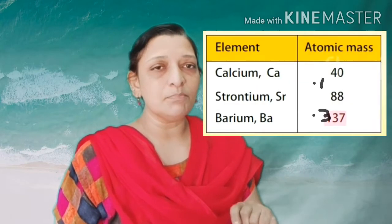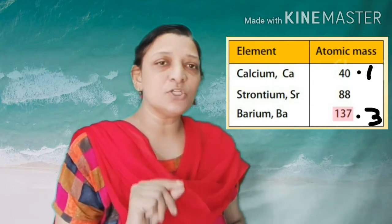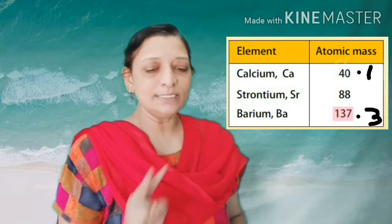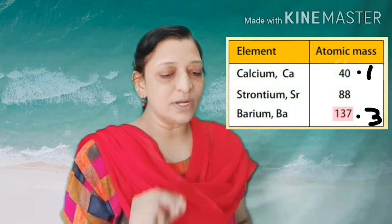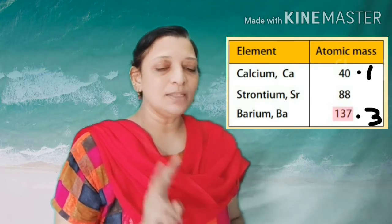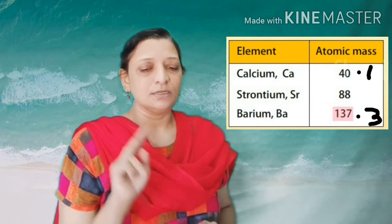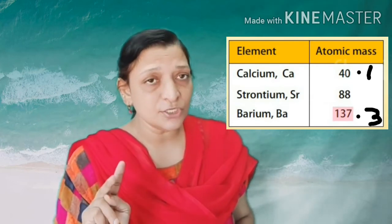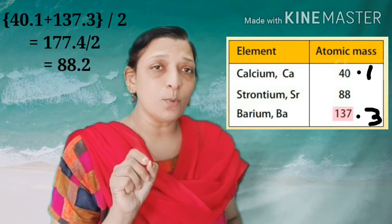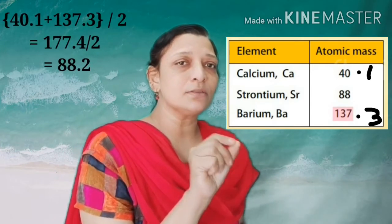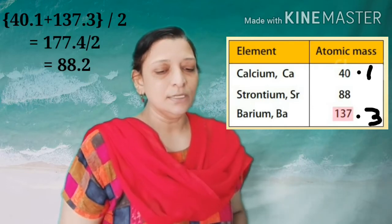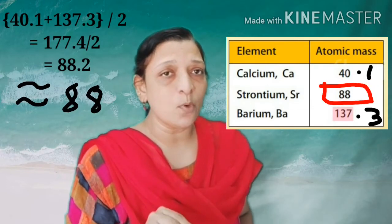The second example is calcium, strontium, and barium. The atomic mass of calcium is 40.1 and that of barium is 137.3. The mean of these two masses, (40.1 + 137.3) / 2 = 88.7, which is the atomic mass of the middle element, strontium. This is the second Dobereiner's Triad.